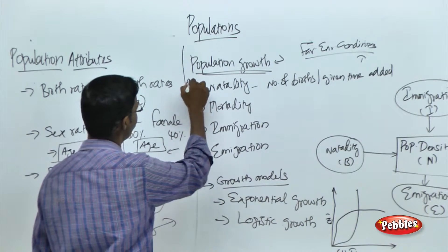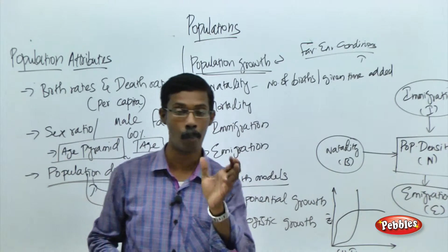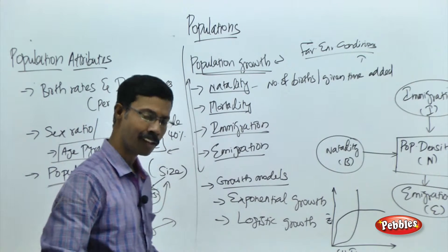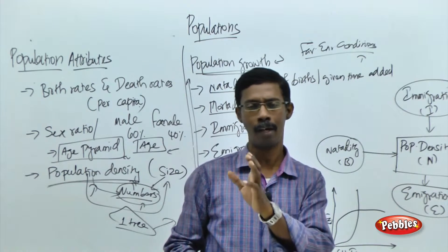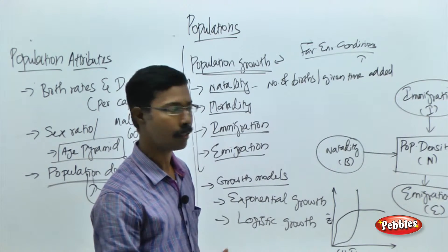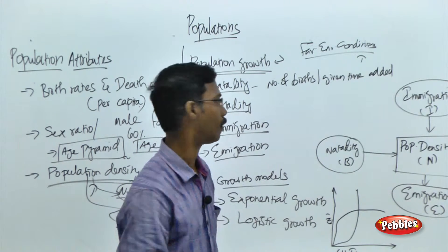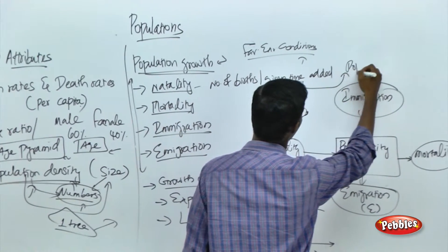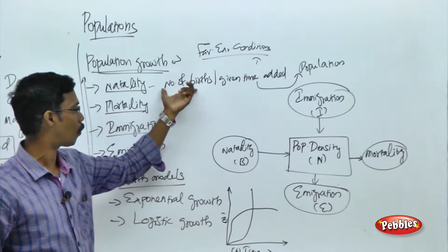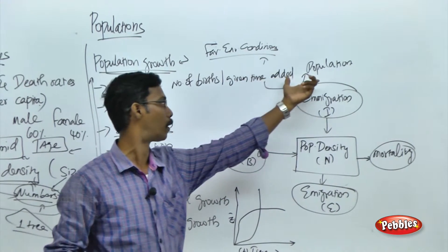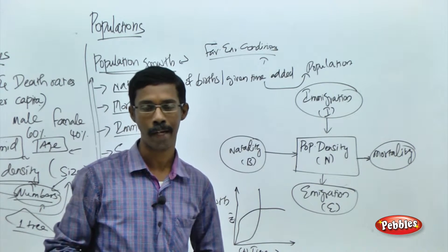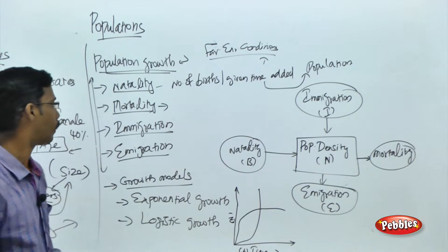So we are going to learn some terms to understand population growth. What are all the factors that determine population growth? Natality, mortality, immigration, and emigration — these are all the things that are going to determine the population growth or population density in the particular environment. Natality refers to the number of births at a given time, and those births are going to add individuals already present in the particular population. In a given population, the number of births adds individuals to the population in a given time — that is natality. Mortality is the vice versa: the number of deaths at a given time reduces the particular numbers from the given population.